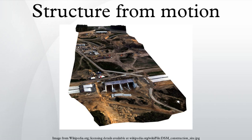In biological vision, SFM refers to the phenomenon by which humans can recover 3D structure from the projected 2D motion field of a moving object or scene. Obtaining 3D information from 2D images: humans perceive a lot of information about the three-dimensional structure in their environment by moving through it. When the observer moves and the objects around the observer move, information is obtained from images sensed over time. Finding structure from motion presents a similar problem to finding structure from stereo vision. In both instances, the correspondence between images and the reconstruction of 3D objects needs to be found.